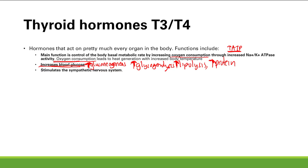Next is increased sympathetic nervous system activation. This increases cardiac output, which makes sense because we're consuming more oxygen and need more oxygen delivered to tissues. The receptor on the heart responsible for this is the beta-1 receptor. Other functions include working with growth hormone to increase growth and bone formation, and finally maturation of the CNS.